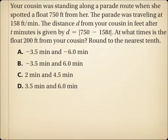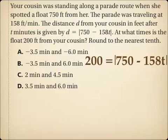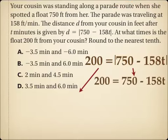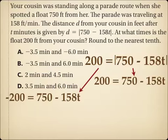If I want to know when the distance from my cousin was 200 feet, I plug in 200 for d. So I write 200 equals the absolute value of 750 minus 158t. Notice the absolute value is already isolated on the right side. Because it's already isolated, I'm ready to break this into two equations: positive 200 equals 750 minus 158t, and negative 200 equals 750 minus 158t.